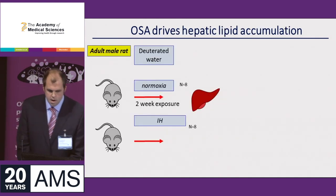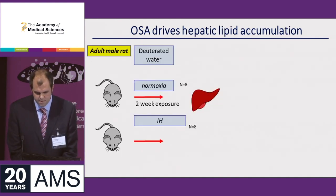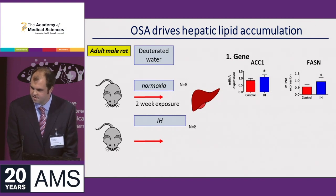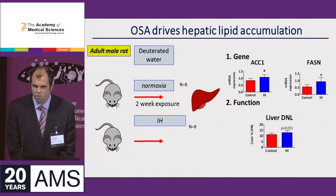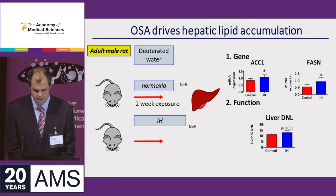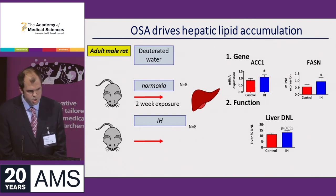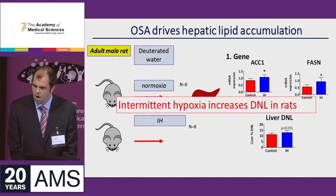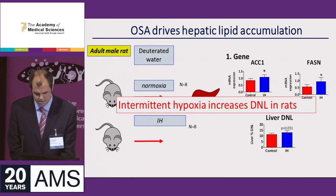In my rodent study, two weeks of intermittent hypoxia was sufficient to not only cause changes in key genes of de novo lipogenesis — here pictured as ACC1 and fatty acid synthase — but more importantly, also had a direct functional impact on de novo lipogenesis measured with deuterated water. So at least in my rat model, intermittent hypoxia looks to increase de novo lipogenesis.